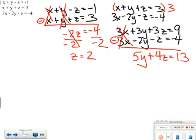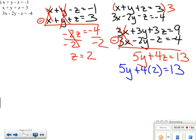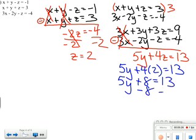Now again, how does this help us now? What do we do next? Plug in two where we see Z. Perfect. So we have five Y plus four times two equals thirteen. Five Y plus eight equals thirteen. Minus eight. Minus eight.